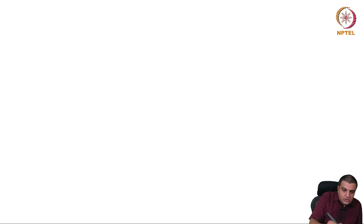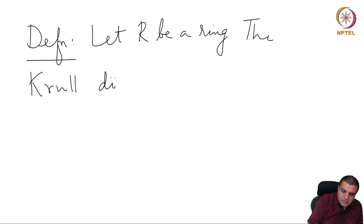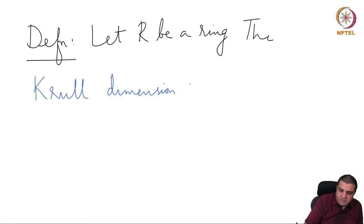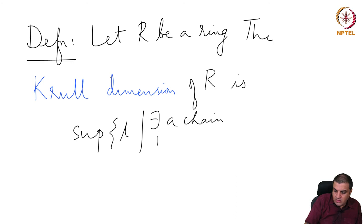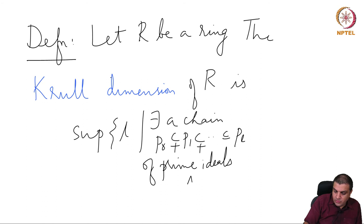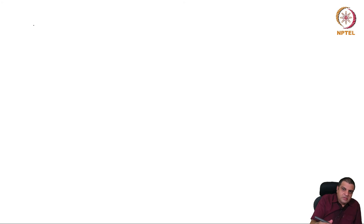Before that, we need to introduce a definition. Let R be a ring. The Krull dimension — named after Krull — of R is the supremum of L such that there exists a chain P0 ⊂ P1 ⊂ ... ⊂ PL of prime ideals.